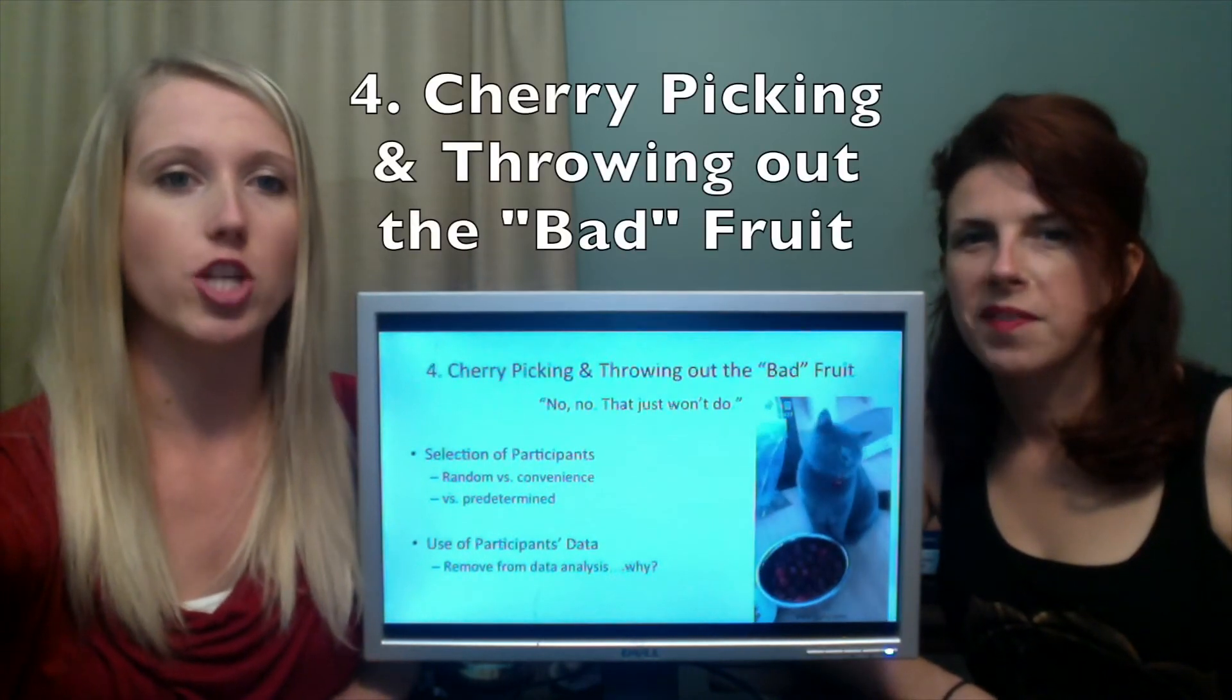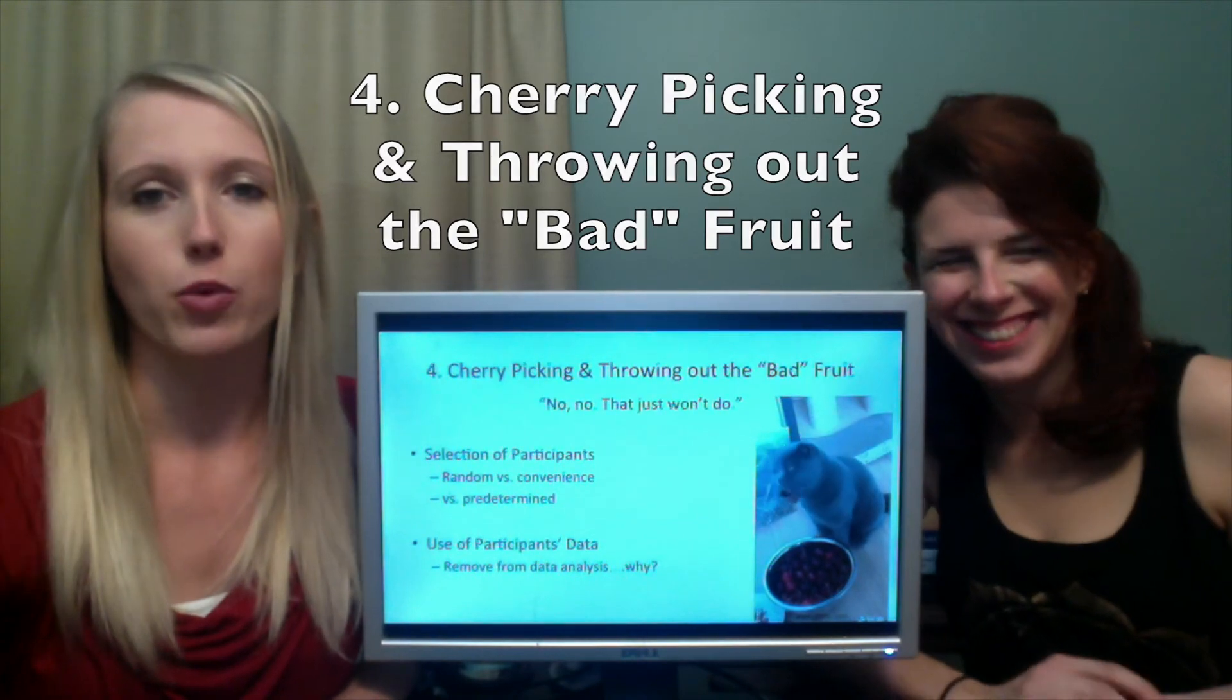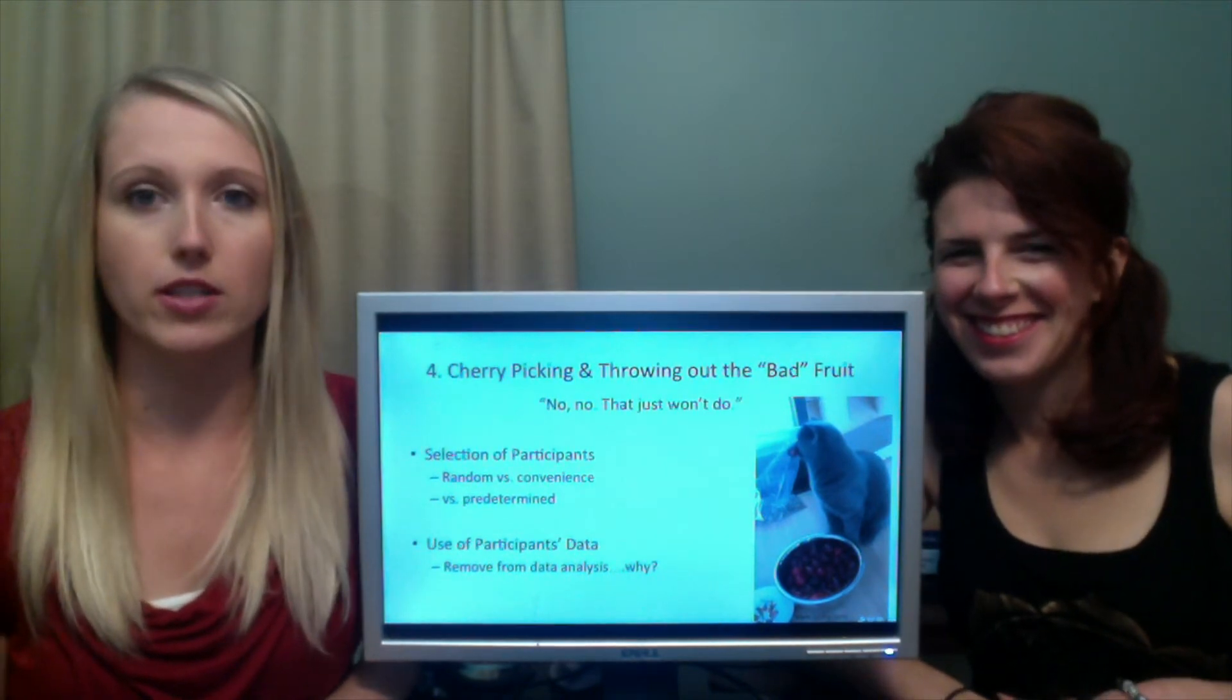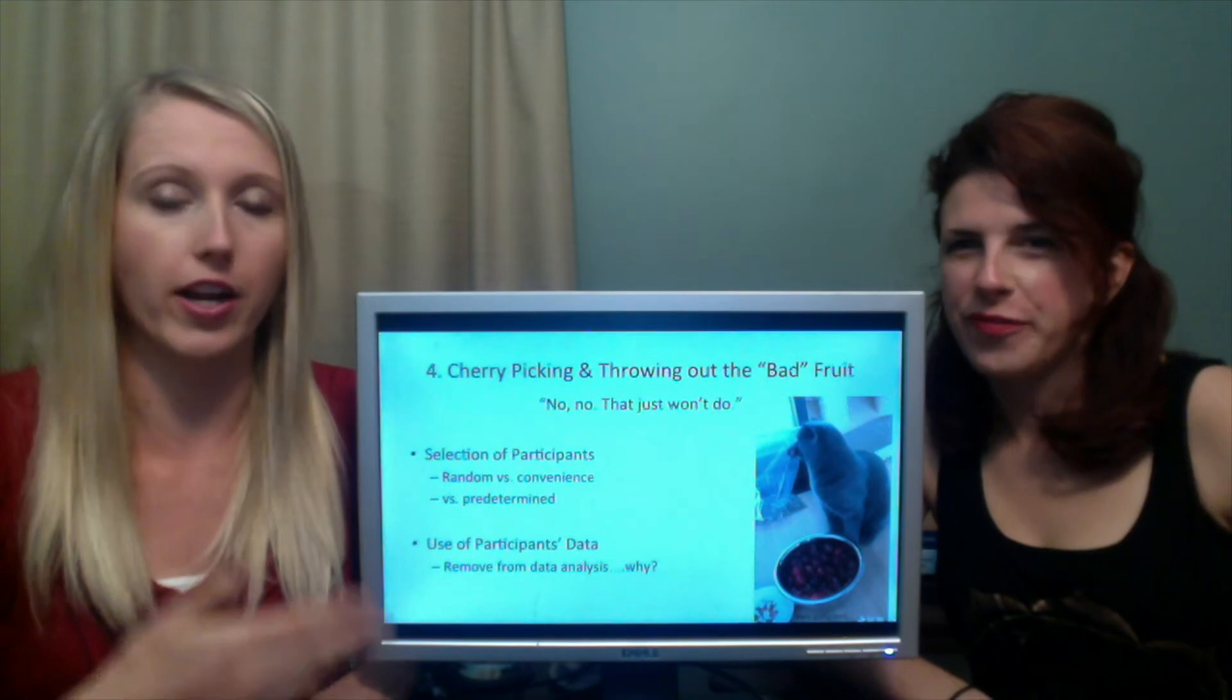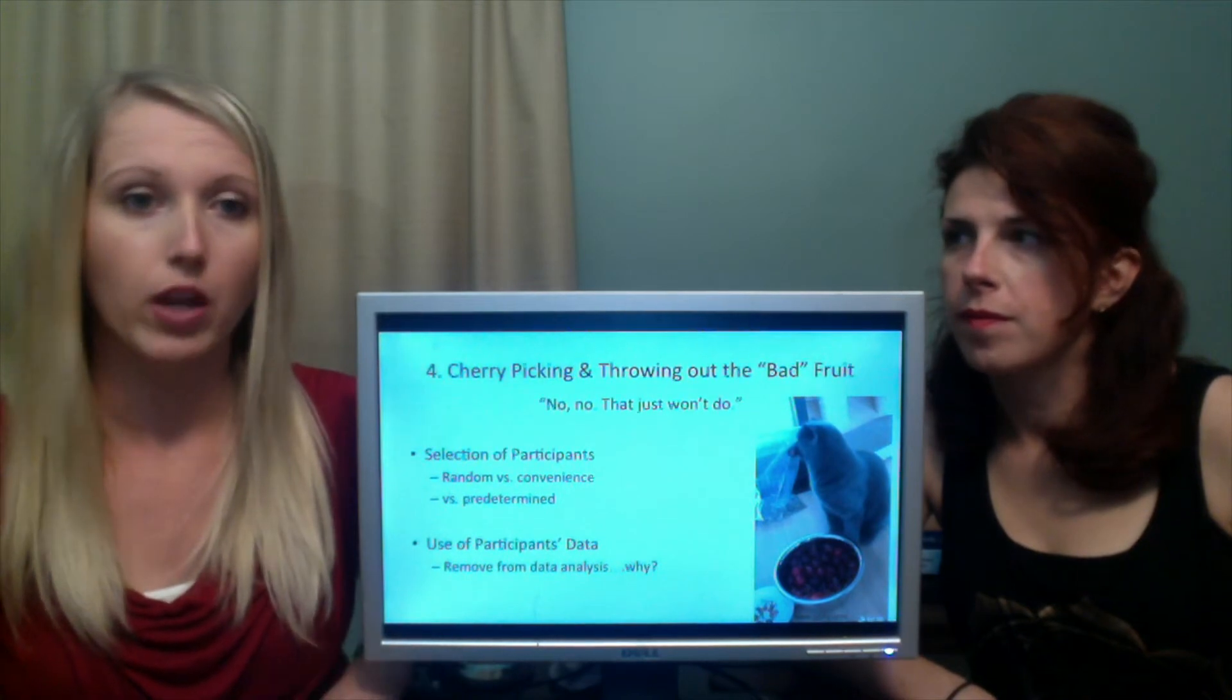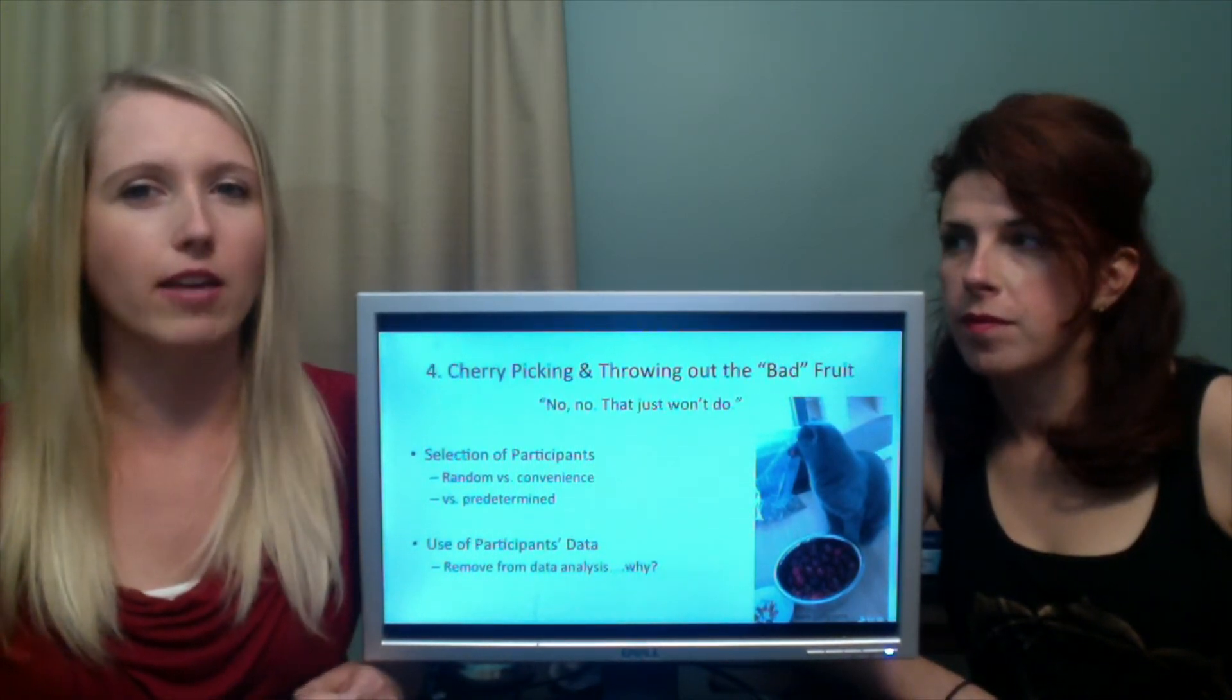Number four is cherry picking and throwing out the bad fruit. When you're selecting your participants, there are different ways to select participants. Random is the best because you're getting a random sample and it's probably going to be pretty representative of the population. Convenience, not the best. Convenience sampling is like volunteering.